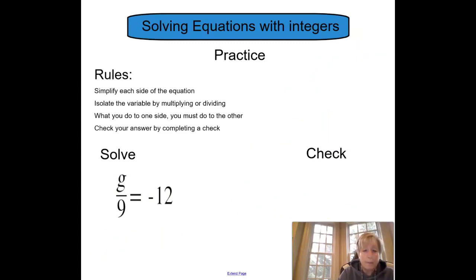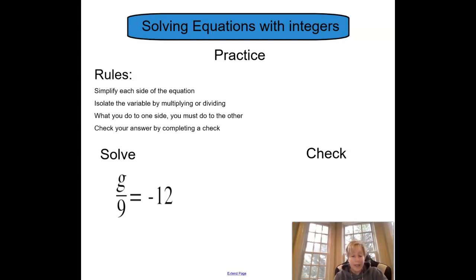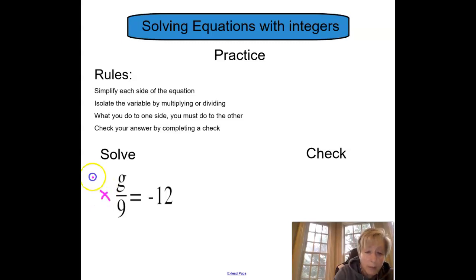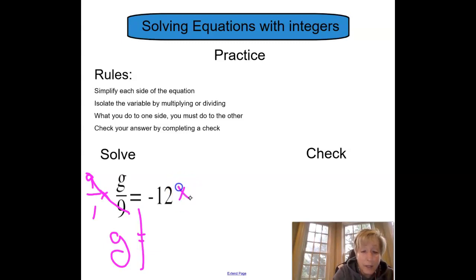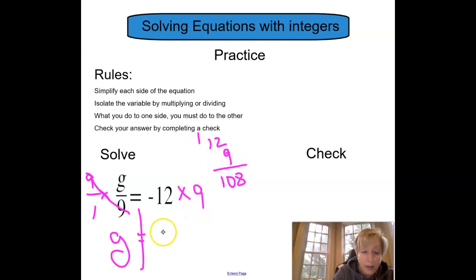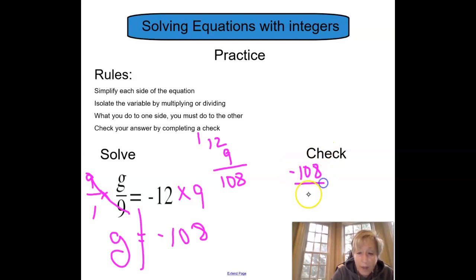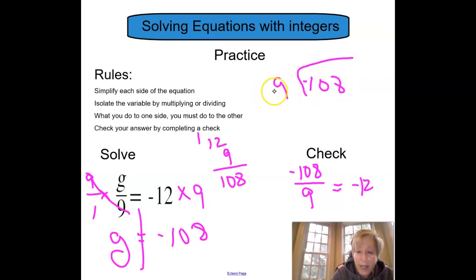So here are a couple for you to try. First one: g divided by 9 equals negative 12. Isolate your g. When we look at this problem, we see that it's a division problem, so we multiply to solve. We multiply by 9 over 1 — that's going to cancel out my 9s and leave me with g. But if I multiply by 9 on the left, I multiply by 9 on the right. That math gives me 108, so it's negative 108. I'm going to prove it with my check: negative 108 divided by 9 hopefully equals negative 12. 9 goes into 10 once — that's 9; subtract gives me 1; bring down my 8; 9 goes into 18 twice — wait, that goes in 12 times. So it equals negative 12. My check is correct.